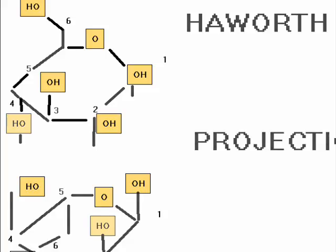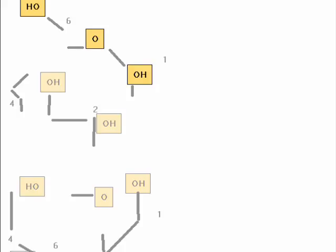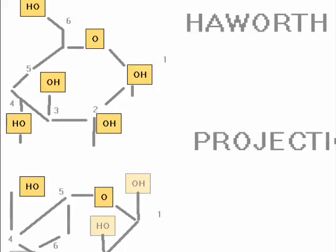A Haworth projection has the following characteristics. Carbon is the implicit type of atom. In the example on the right, the atoms numbered from 1 to 6 are all carbon atoms.